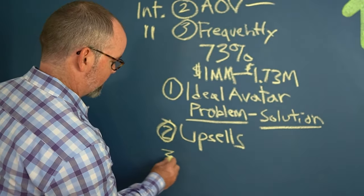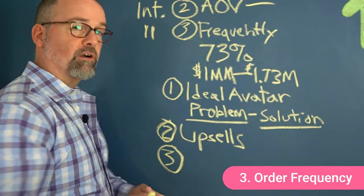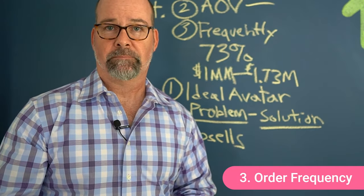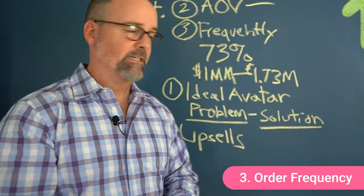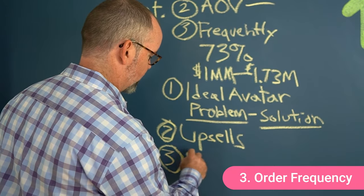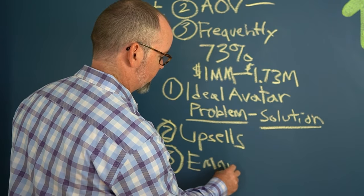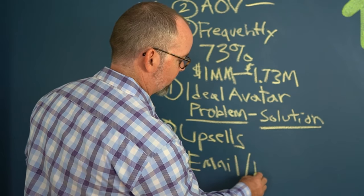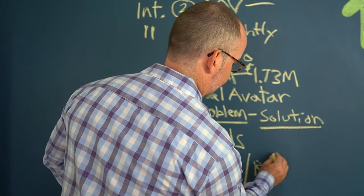Now, the third way is through more frequent purchasing. And this is typically done through a combination of email nurture sequences, as well as retargeting.